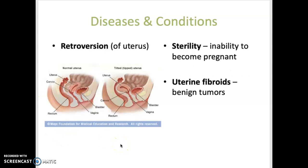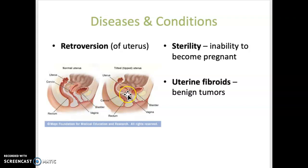Retroversion means when an organ is turned backward from its normal position — in this case the uterus. The normal position has the uterus bent forward, but during retroversion it is tipped or bent backward. Sterility is the inability to reproduce or become pregnant. Uterine fibroids are benign tumors that develop in the uterus.